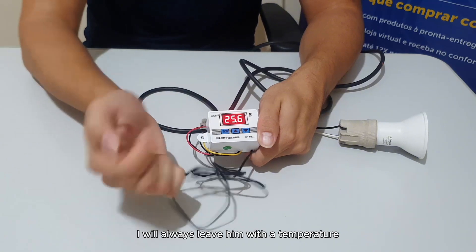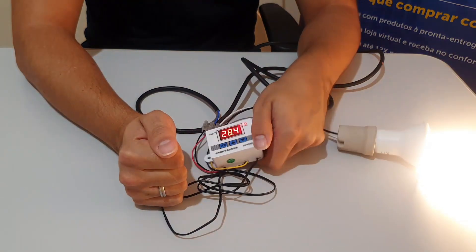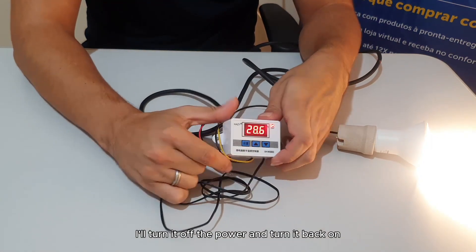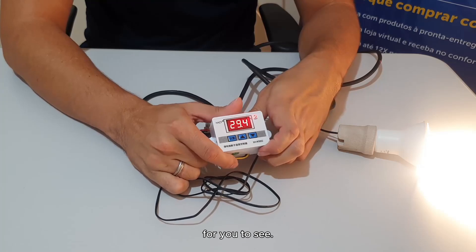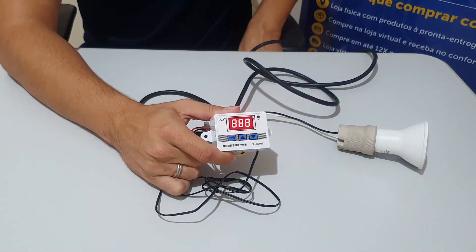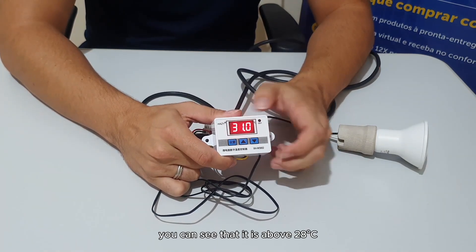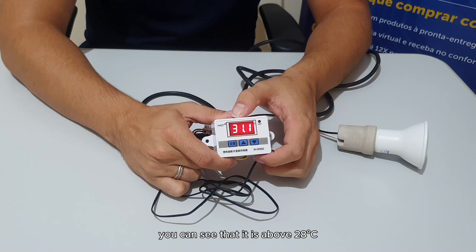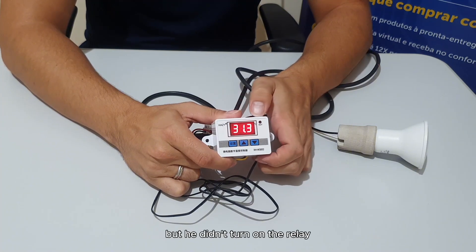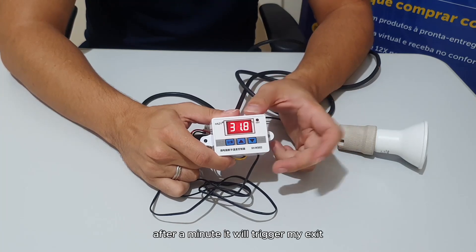I will leave it with a temperature greater than 28 degrees celsius which is what is programmed here. I'll turn off the power and turn it back on for you to see. I made the connection to power again. You can see that it is above 28 degrees celsius but it didn't turn on the relay. That's because I left it with a one minute delay. After a minute it will trigger my output.